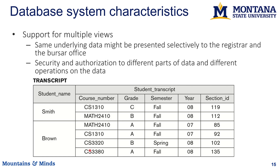Another nice thing about databases is that you can create new tables based on existing data — these are called views. They look like another table and can be used like one, but the data is derived from other tables. For example, you can create a view called 'transcript' that pulls data from multiple tables to show a student's courses, grades received, when they took them, and which section they were in. This is a virtual table based on up-to-date data from the underlying tables.